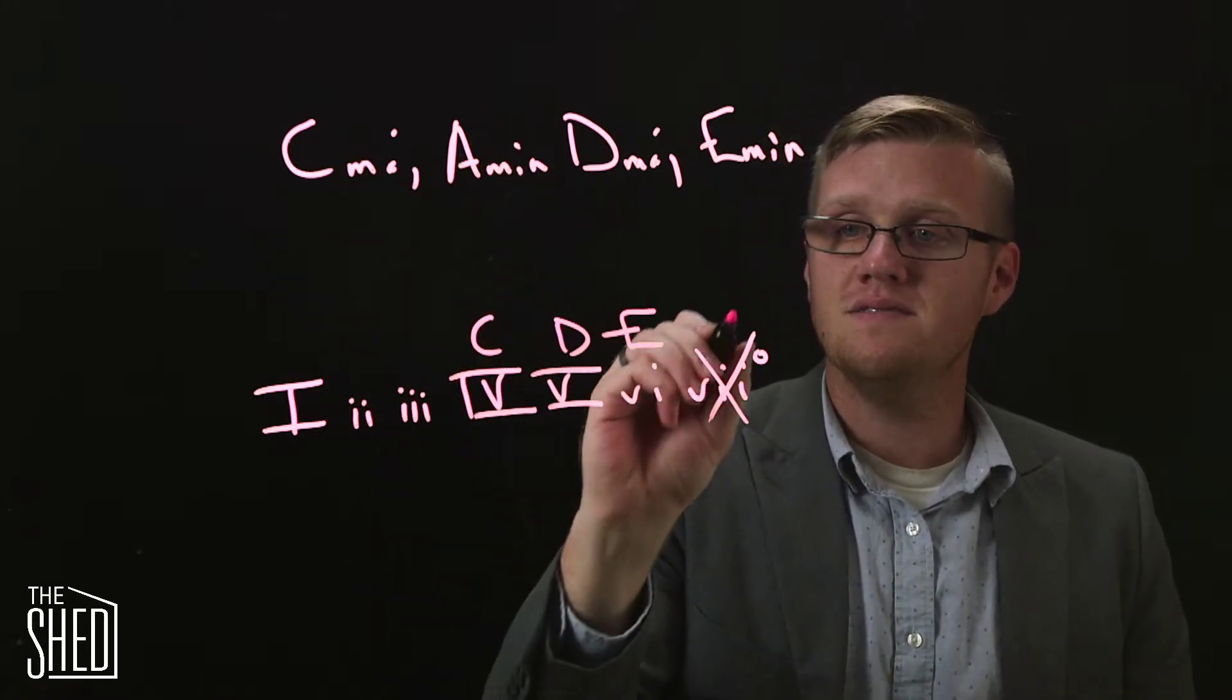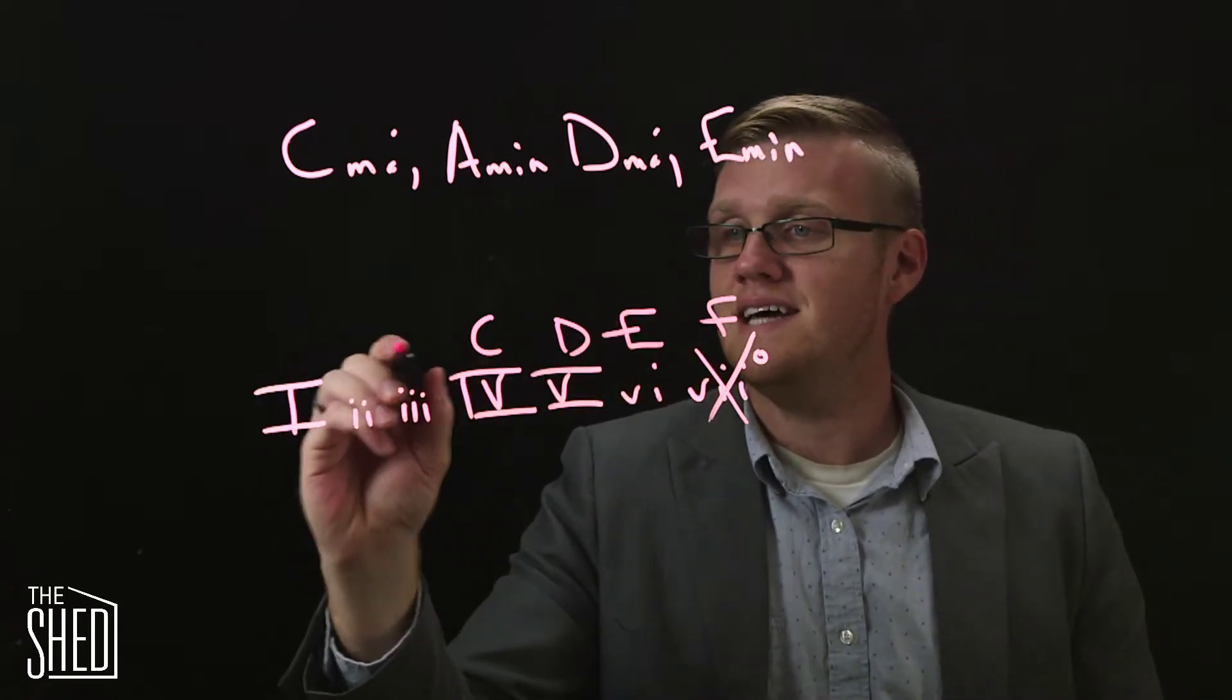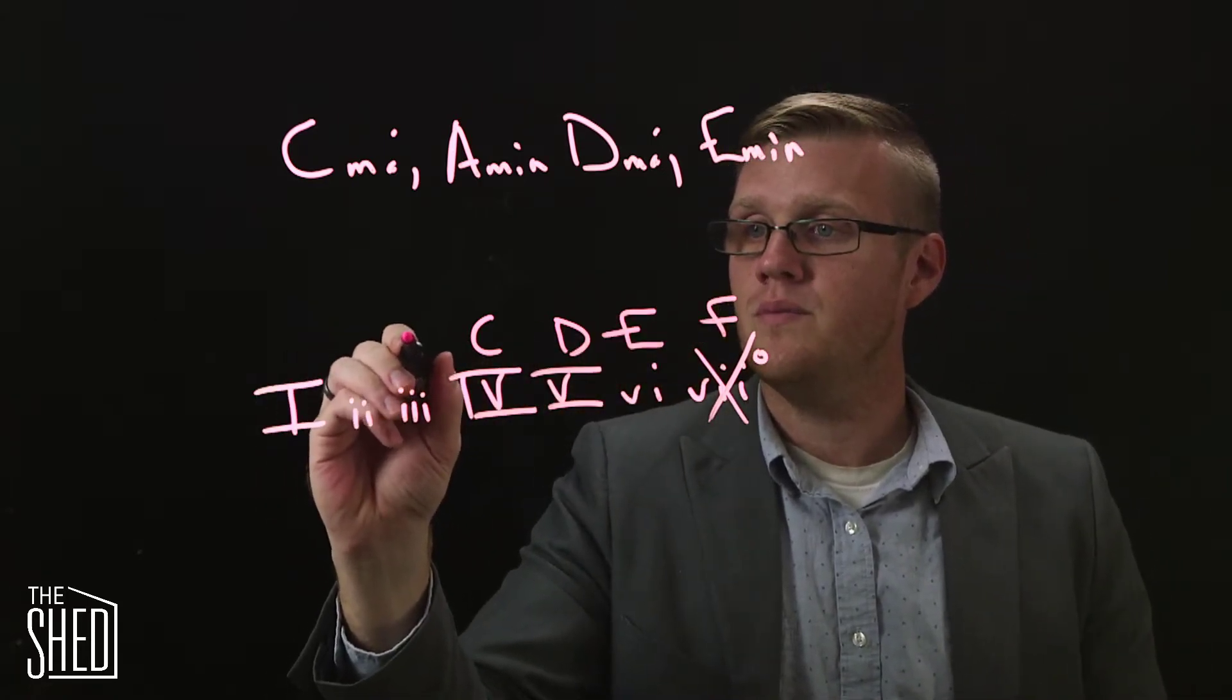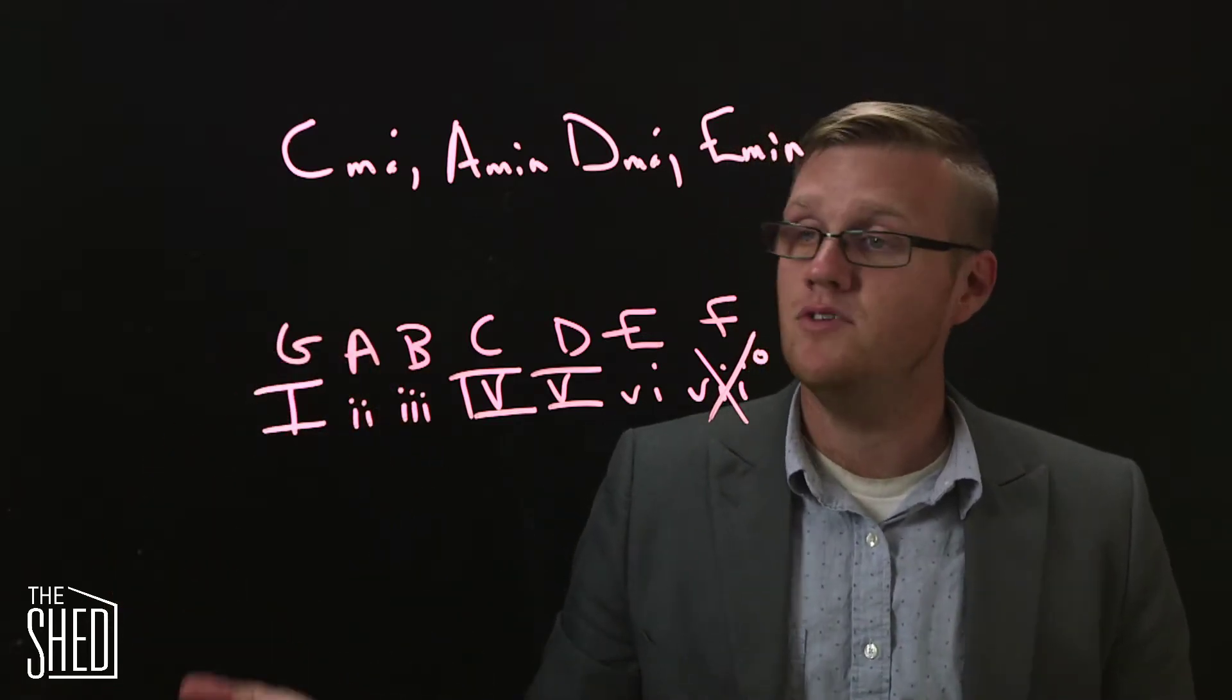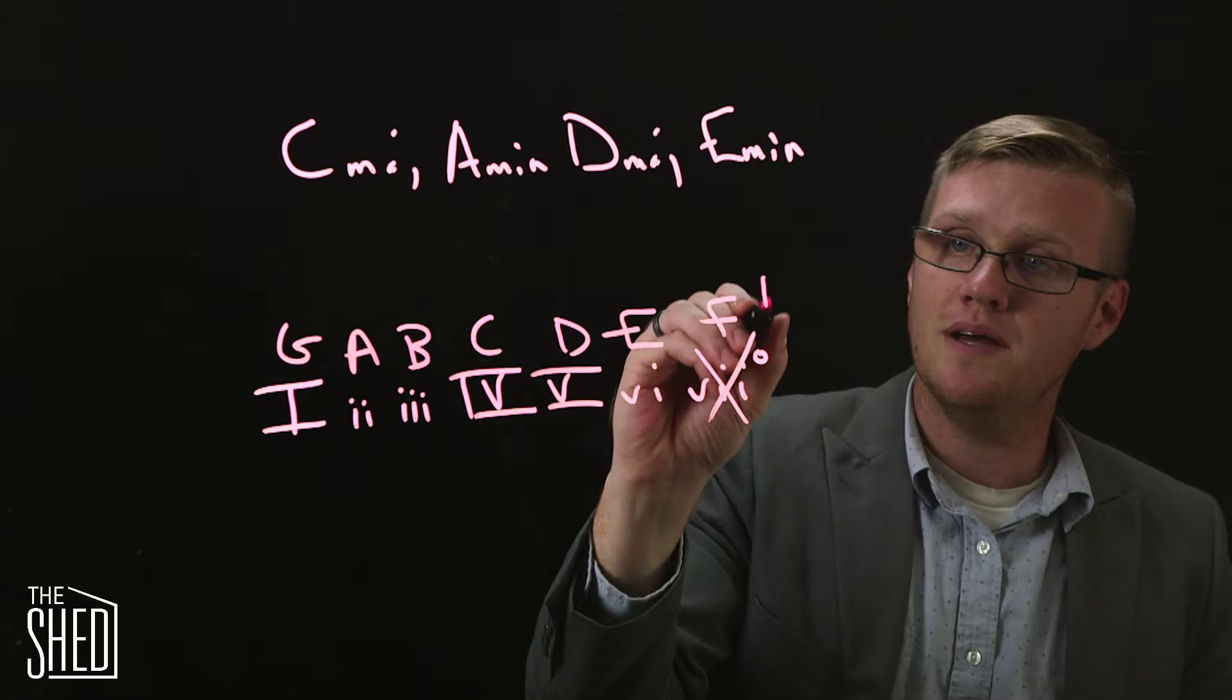I'm just going to fill the rest of the scale in using diatonic order or alphabetical order. Oh, it's a G major scale. G major scale is a sharp key. It has one sharp, F sharp.